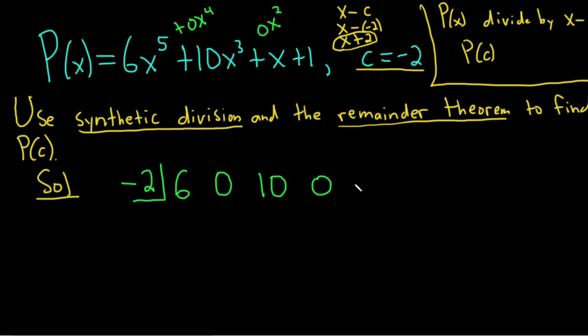Then we have x, which is just going to give us 1, right? Because it's 1 times x. And then the constant 1. So 6, 0, 10, 0, 1, 1. Okay. Then you draw a line like this.